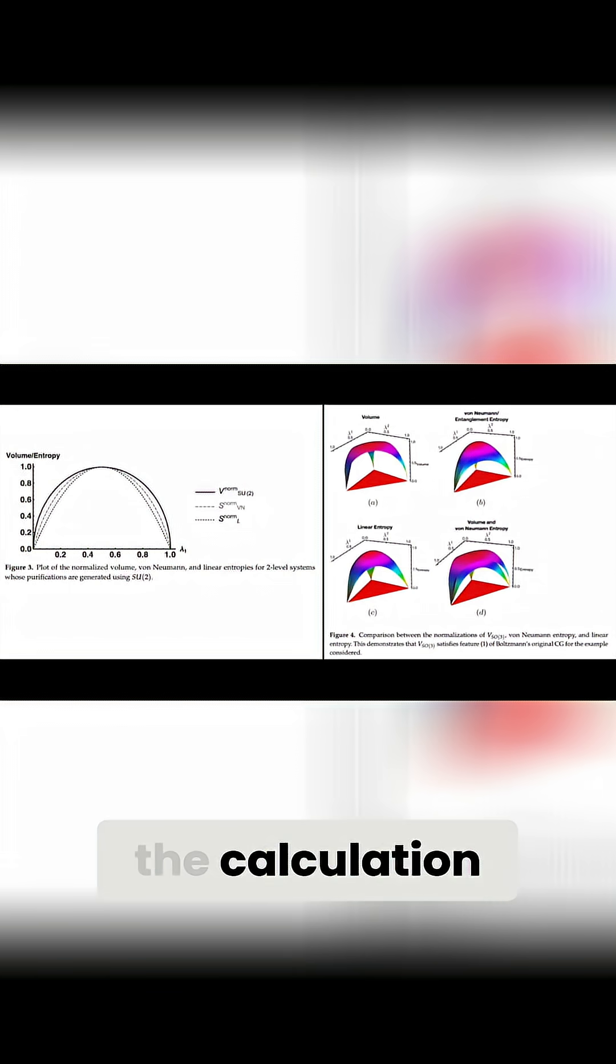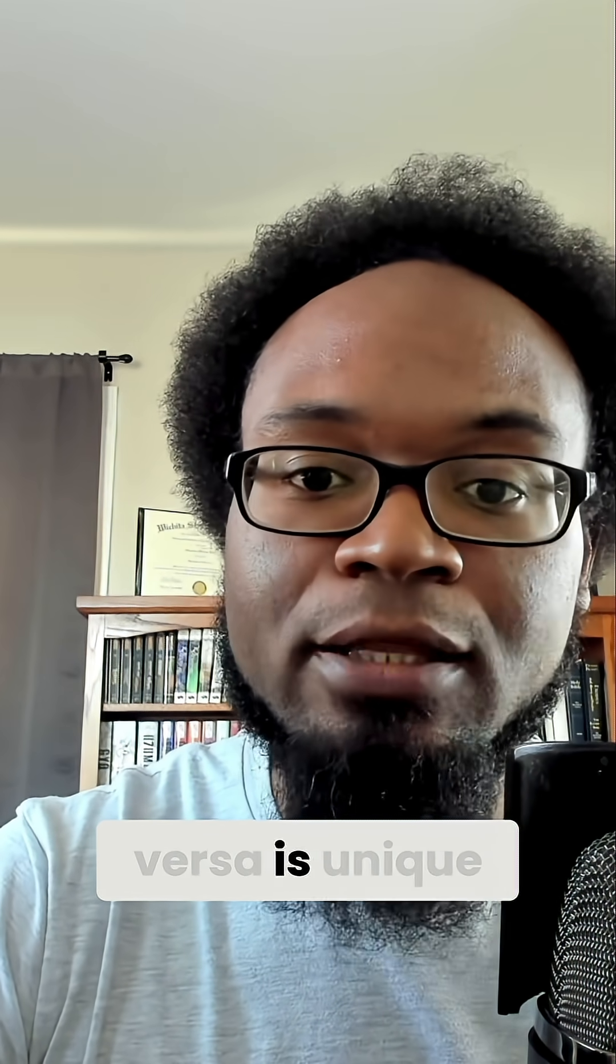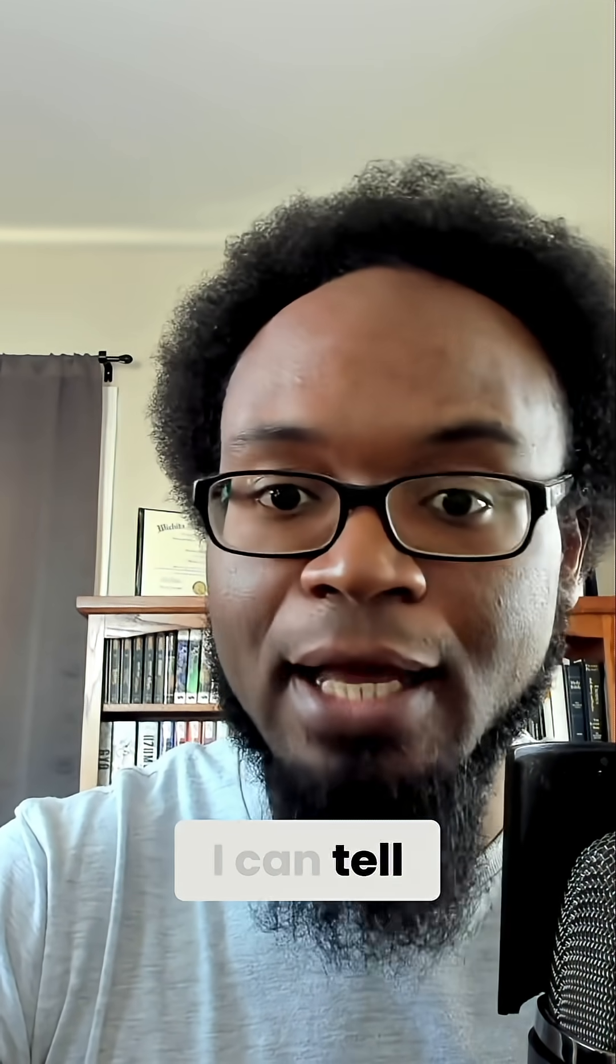And when I did the calculation, and I was able to show that my prediction was correct, that's where I was like, ha, I think I have something here. And no other physicist, as far as I can tell, thought to do this calculation, or even thinks of entropy in terms of symmetry. This idea that entropy implies symmetry and vice versa is unique to me as far as I can tell.